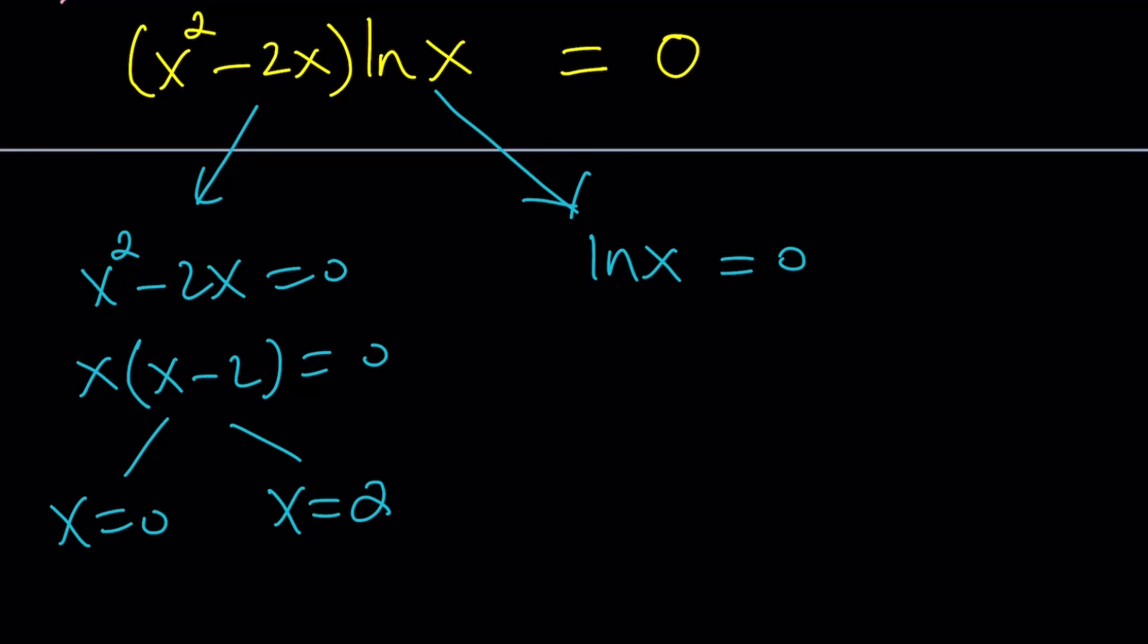lnx equals 0, as you know, you should know. This is base e, natural log. If you use the definition of logarithms, it's going to be e to the power of 0 equals x. Or you should know this, the log of 1 is 0 at any base. So, it looks like we've got three solutions.